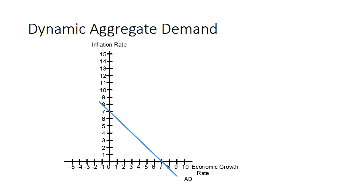The Dynamic Aggregate Demand curve shows us all the possible combinations of economic growth and inflation for a given rate of spending growth. Again, 7% in this example.